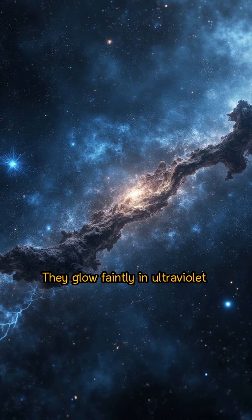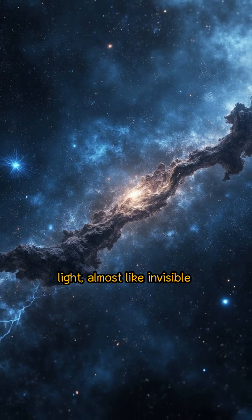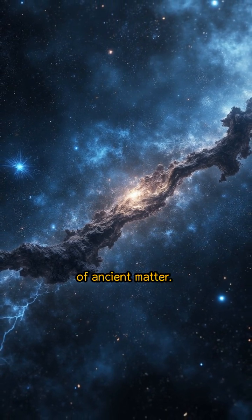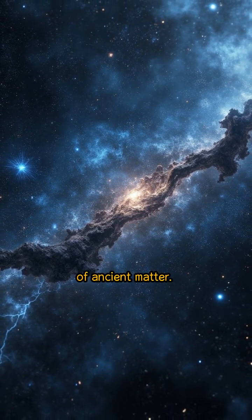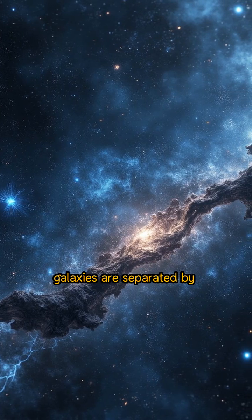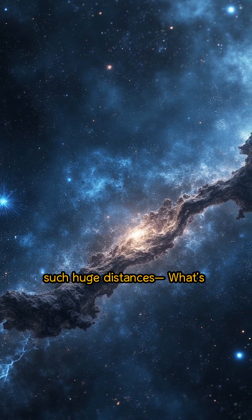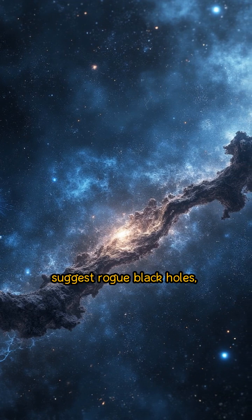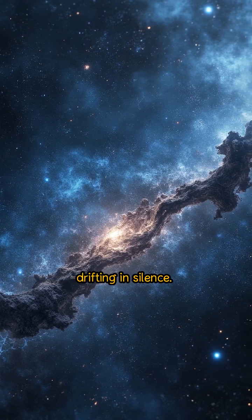They glow faintly in ultraviolet light, almost like invisible rivers of creation, bridging islands of stars with threads of ancient matter. Could something be out there? Now comes the mystery. If galaxies are separated by such huge distances, what's living in between? Some theories suggest rogue black holes, drifting in silence.